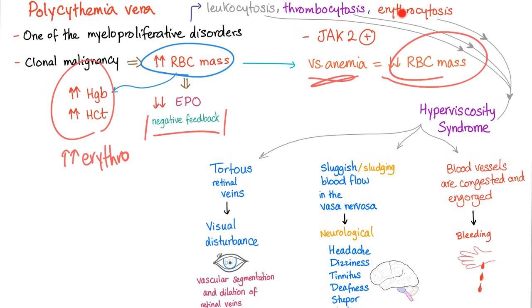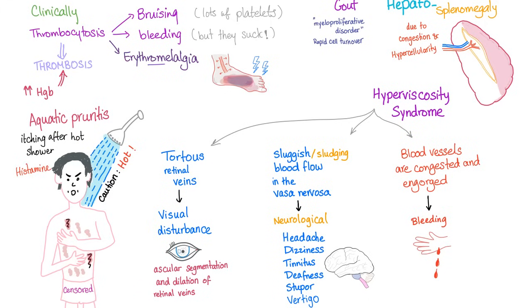This is different from anemia — anemia is decreased red cell mass; polycythemia is increased red cell mass. Leukocytosis, thrombocytosis, and erythrocytosis lead to hyperviscosity syndrome, causing visual disturbance, neurological problems, and bleeding. Clinically, thrombocytosis is present — all three cell lines are increased. There will be bruising because of many platelets, and bleeding because these platelets are dysfunctional — it's a neoplasm, not beautiful functioning platelets. Bleeding is also part of hyperviscosity syndrome. Thrombocytosis can lead to a condition called erythromelalgia, to be discussed in the next slide.